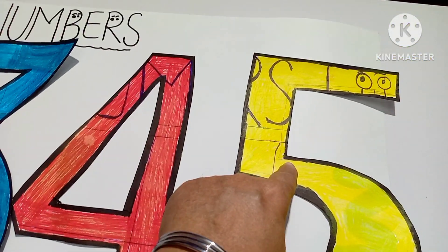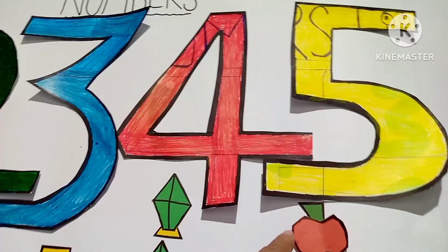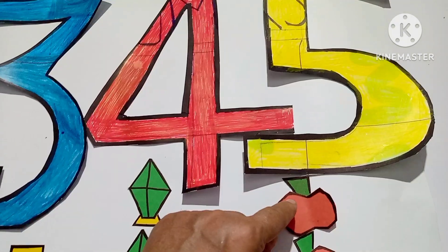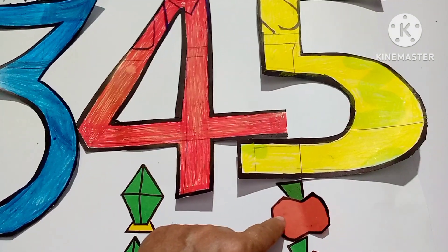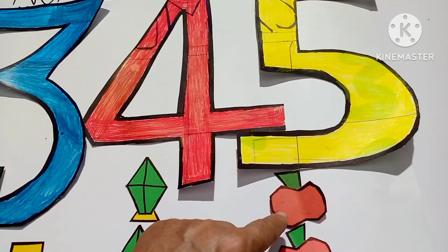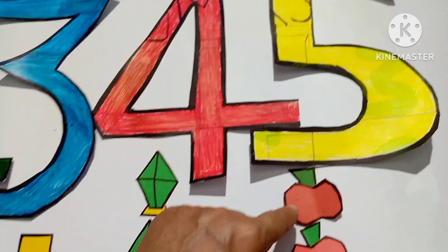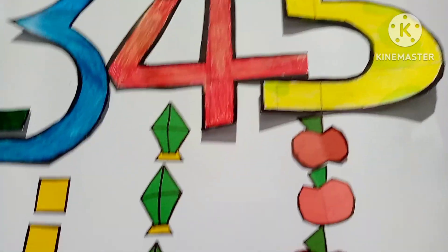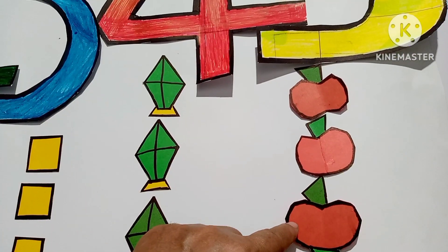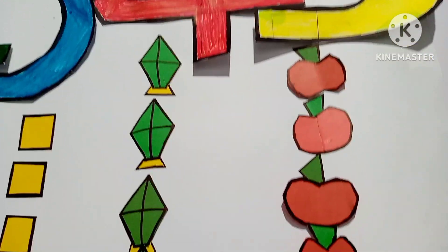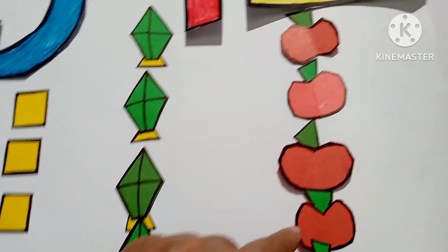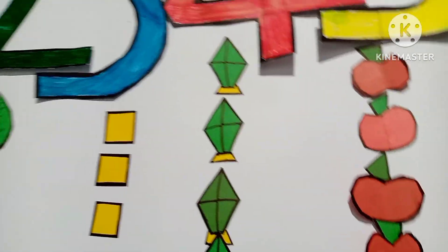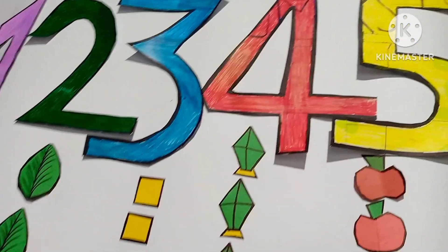This is number five. One, two, three, four, five. There are five apples.